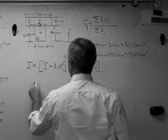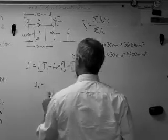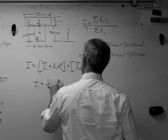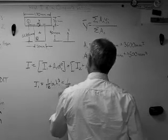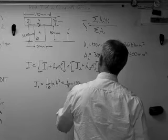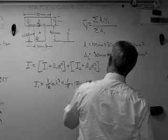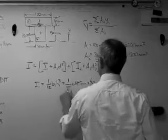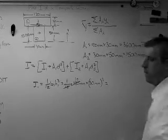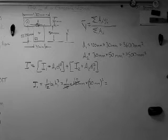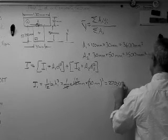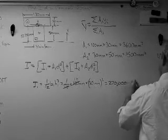So I1, we can figure this out, is 1/12 B1 H1 cubed. Okay, that's 1/12 times 120 millimeters times 30 millimeters cubed. Okay, well right away, see that's 10. 3 times 3 is 9, times 3 is 27, so you add all the zeros at the end of it, and you get 270,000 millimeters to the fourth.